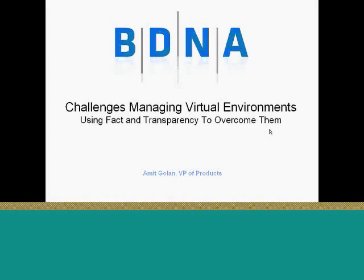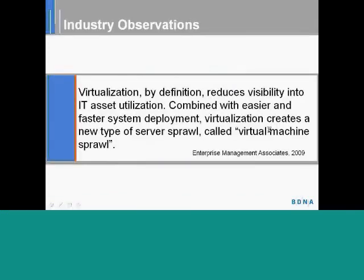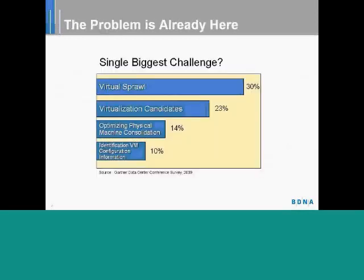Now, what many people think about when they hear the word challenges and visualization within the same sentence is virtual scroll. Virtual scroll, according to Enterprise Management Associates, is the uncontrolled proliferation of virtualization and virtual machines as a result of the ease of deployment — I should almost say the unbearable ease of deployment — along with the reduction of visibility into IT assets utilization, that is at the very core of what we call visualization. According to this survey by Gartner, virtual scroll is the single biggest challenge when visualization is discussed.